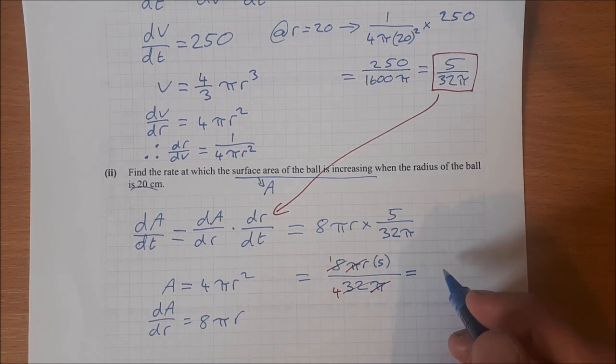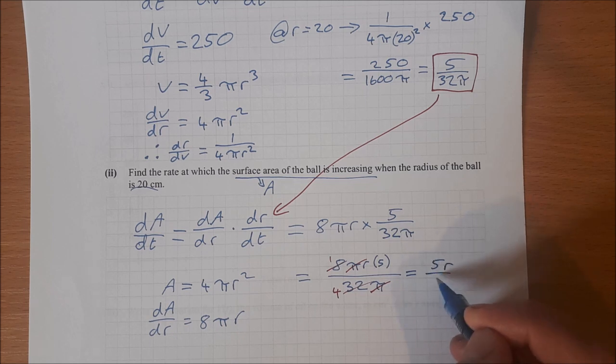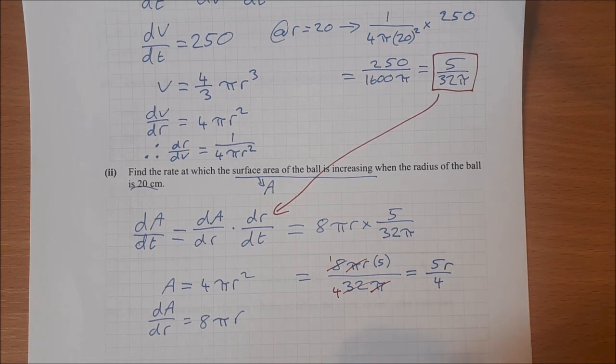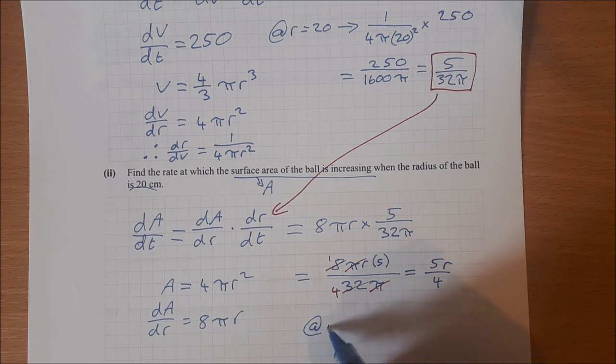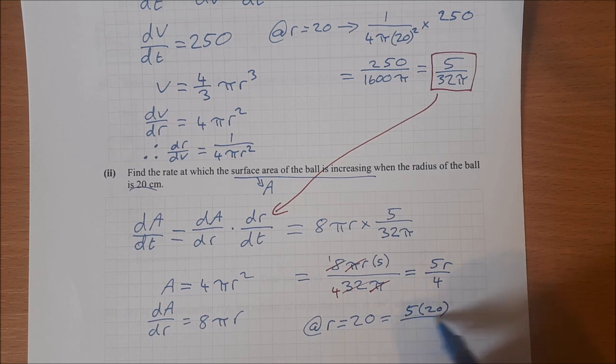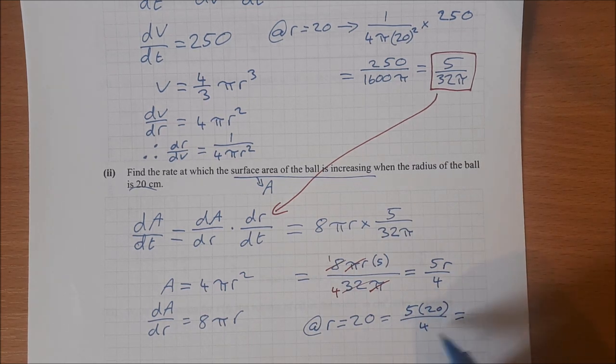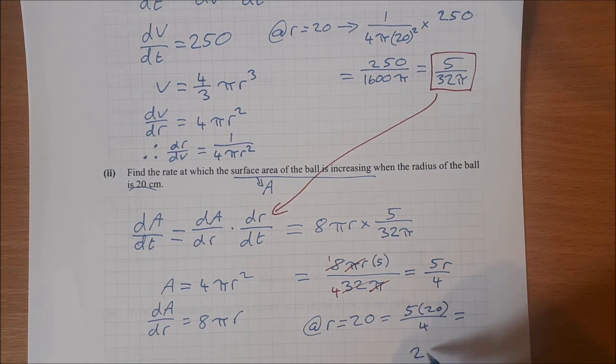We get the pi's are canceling, and then we also get 8 into 32 is 4, so we end up getting 5r over 4. And then we want at r equals 20. That's equal to 5 times 20 over 4. 5 times 20 is 100, 100 divided by 4 is 25, so that's equal to 25.